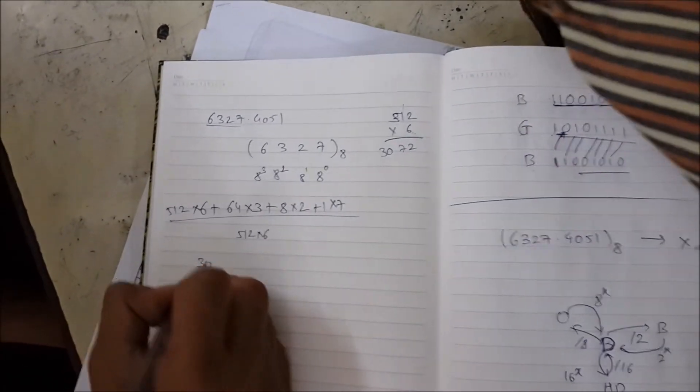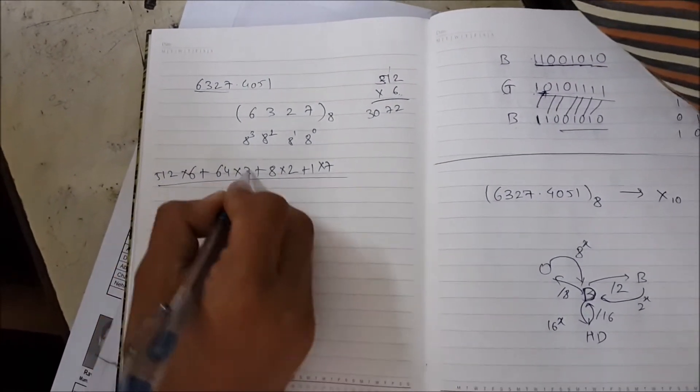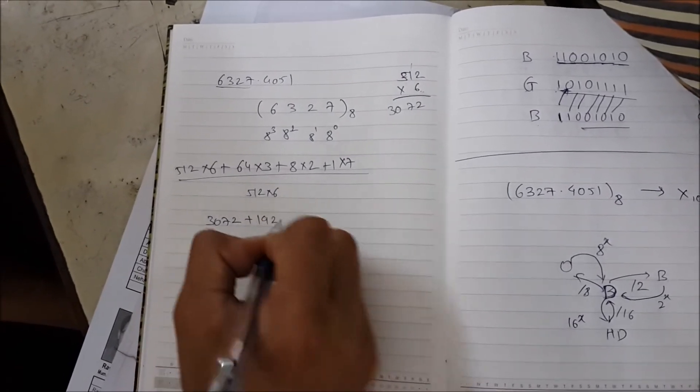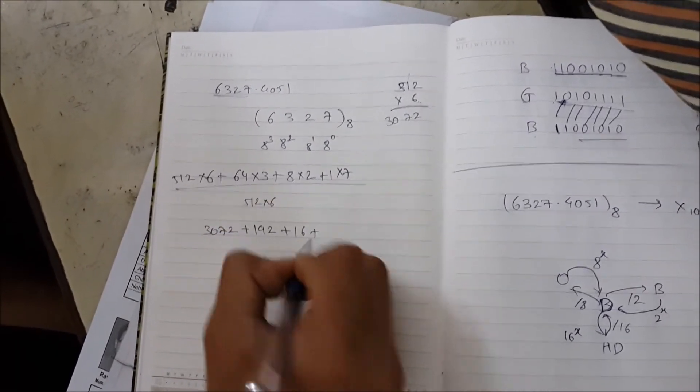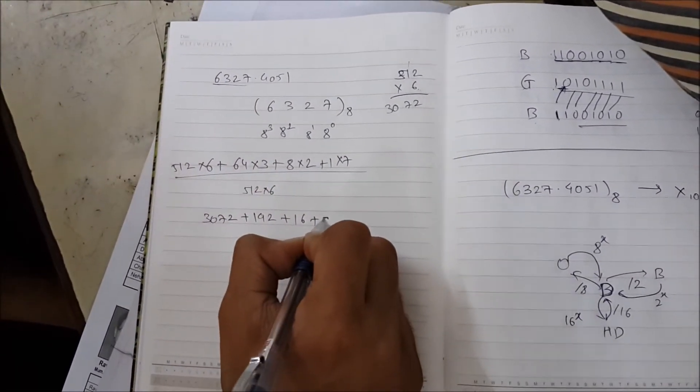So this is 3072 plus 64 times 3, which is 192, plus 16, plus 7.